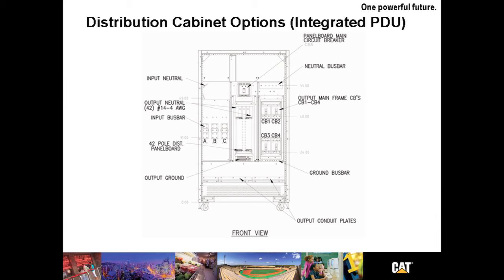Another distinguishing feature of the UPSB-130 is the distribution cabinet option or integrated PDU as we refer to it. CAT offers a great option for those that do not want to take up data center space with additional PDUs.